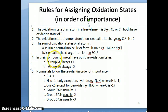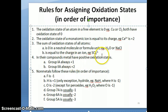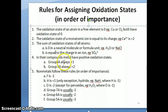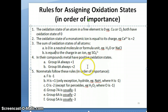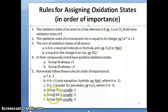Now we get to the more complicated rules where you have to follow a certain ranking. Rule four says that in their compounds, metals always have positive oxidation states. Not all metals have the same oxidation number at all times, but there are two exceptions: Group 1A metals always have an oxidation number of plus one, and Group 2A metals always have oxidation numbers of plus two. Transition metals from other groups may have different oxidation numbers depending on how they form their compounds.